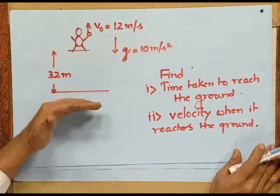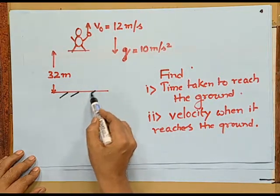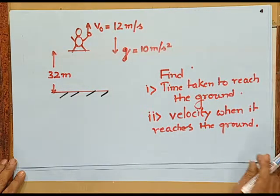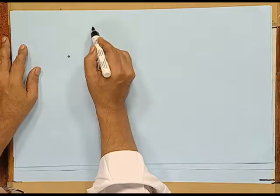Here we are given a situation where an object is thrown with a velocity of 12 meters per second and the location is 32 meters above the ground level. The questions are: the time taken for this object to reach the ground, and second, the velocity when it reaches the ground.